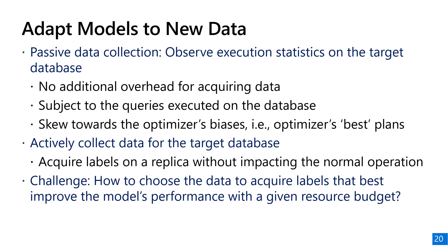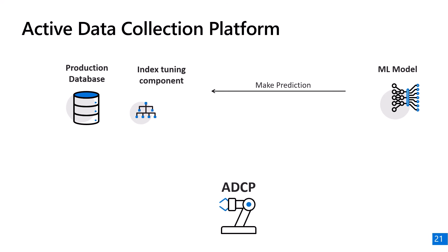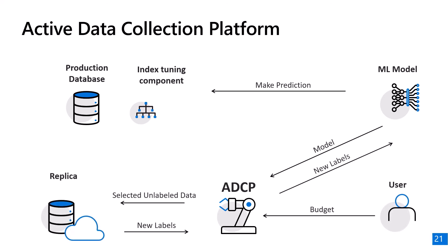We propose the active data collection platform. The index tuning component uses our machine learning model to predict if an index configuration will cause query regressions. To adapt the model to new data distributions, our platform takes the model and a budget from the user and collects additional data labels from a replica of the target database. These additional labeled data are then sent back for model adaptation or retraining.